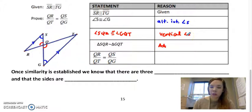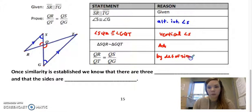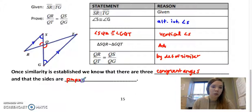But remember, we do still have side, angle, side. And side, side, side, where the sides are proportional. And then we can say QR over QT is equal to QS over QG by definition of similar. Once similarity is established, we know that there are three congruent angles and that the sides are proportional. So if you're trying to prove that some angles are congruent or sides are proportional, you would use definition of similar.